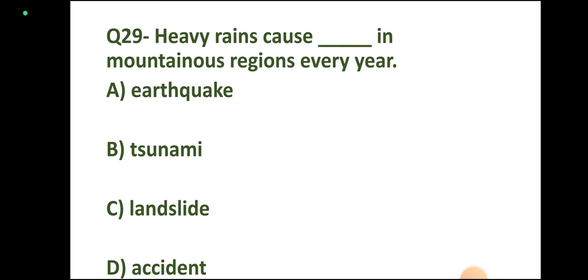Question number 29: Heavy rains cause what in mountainous regions every year? Options: earthquakes, tsunami, landslide, accident. Correct answer: landslides.